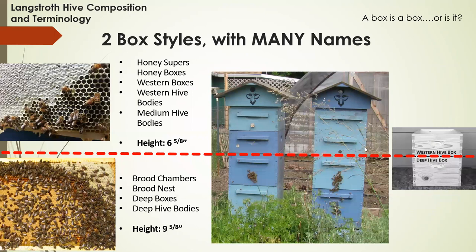Two box styles with many names: the vocabulary can be a little confusing. Your brood boxes or deep hive bodies — also called brood chambers, brood nests, deep boxes — is where the bulk of your colony resides and where you don't take resources. Your honey supers can be called all sorts of different things, but the bottom line is the honey supers are what you take for yourself. You may leave a honey super on the colony for overwintering. I like to leave an extra box on there just in case they run out of food — last year we didn't have any opportunities to do emergency feeding until pretty late in the year, and having that extra honey box really saved my hives.